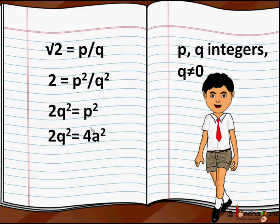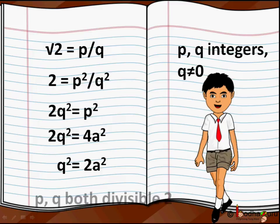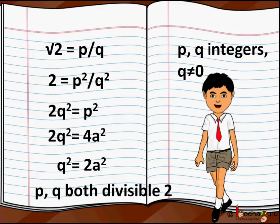We can express p as 2a where a is an integer, and if we put this value in 2q² equals p², we will get 2q² equals (2a)² which equals 4a². If we simplify it further, we will get q² equals 2a².